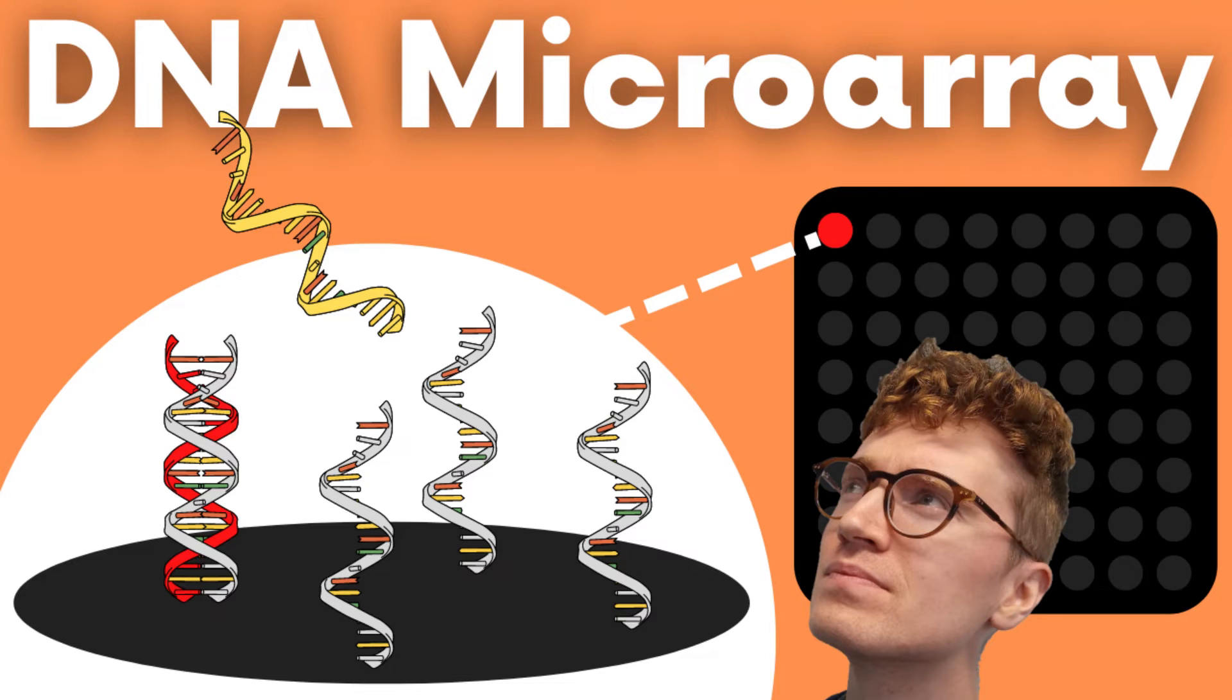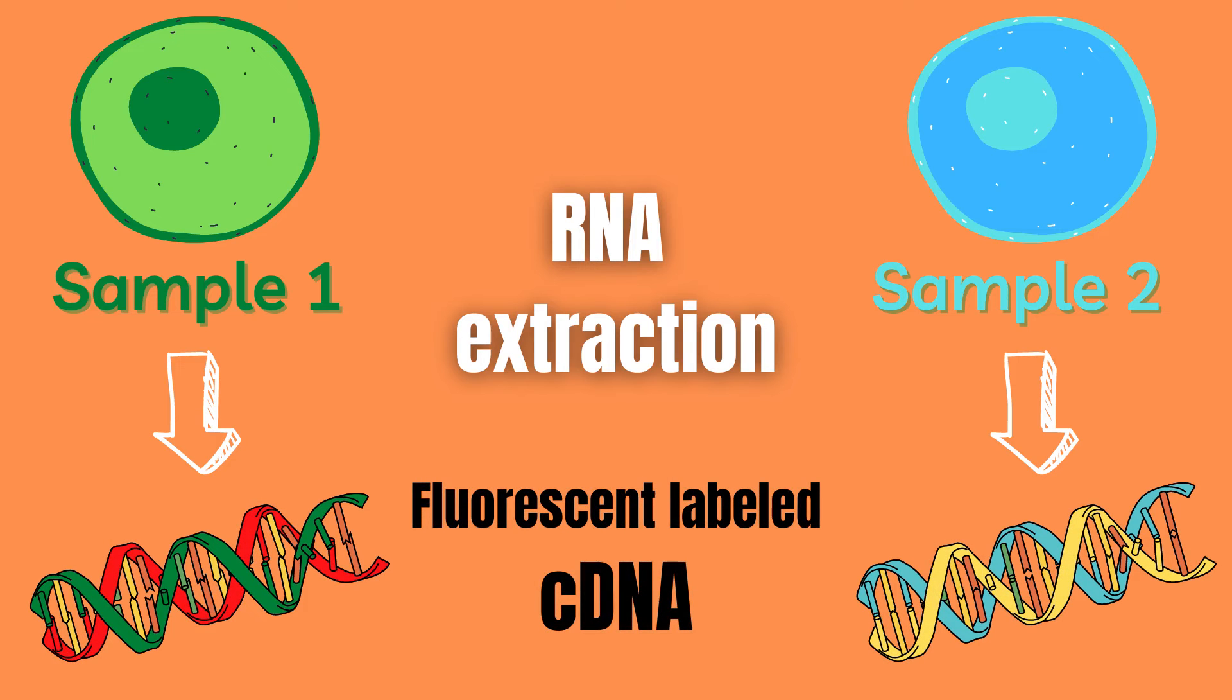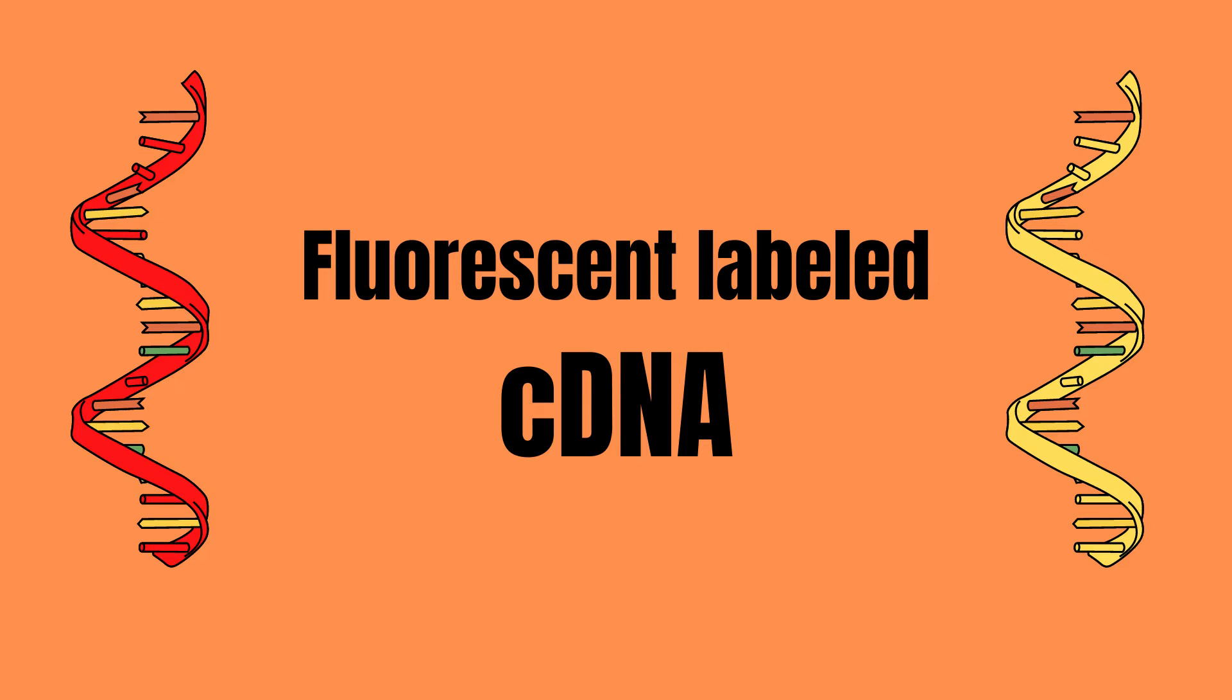What follows is an example of how to carry out this DNA microarray technique and how to interpret it. First, RNA is extracted from two samples and is transcribed into cDNA using reverse transcriptase. During this step, each cDNA molecule is fluorescently labeled with different colors. In our case, sample one has a red label and sample two has a yellow label.